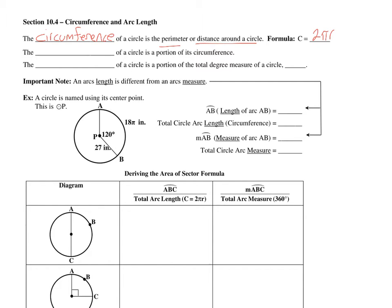The arc length of a circle is a portion of its circumference — this is a new idea we're working with. The arc measure of a circle is a portion of the total degree measure of a circle, which is 360 degrees.